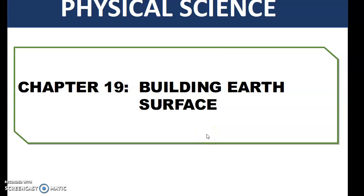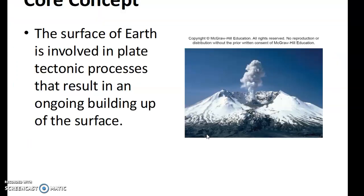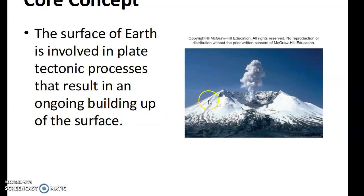We turn to chapter 19, which is entitled Building the Earth's Surface. The idea here is that the surface of the Earth is involved in plate tectonic processes that result in the ongoing buildup of the surface. These are certain things that we see taking place today.